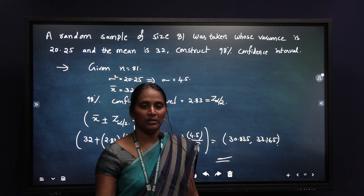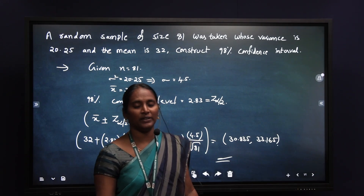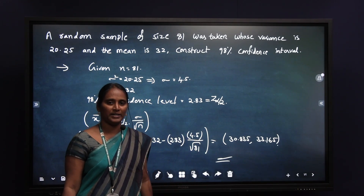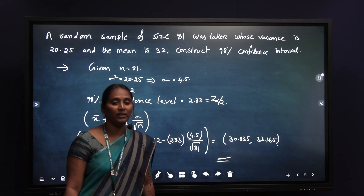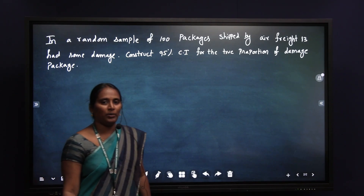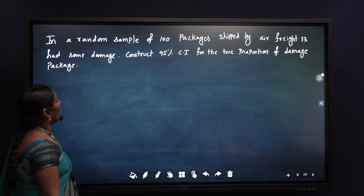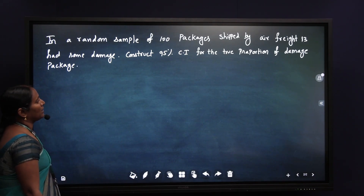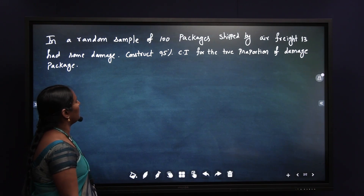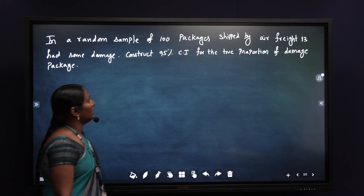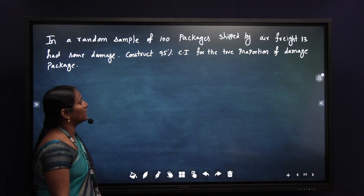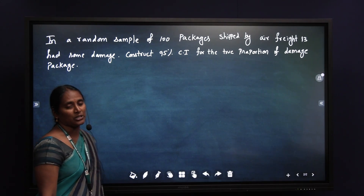Whenever we are having a single mean for the given data, in this way we are going to find out a confidence interval estimate for the single mean. Now let us see the next problem. In a random sample of 100 packages shipped by airfreight, 13 had some damage.